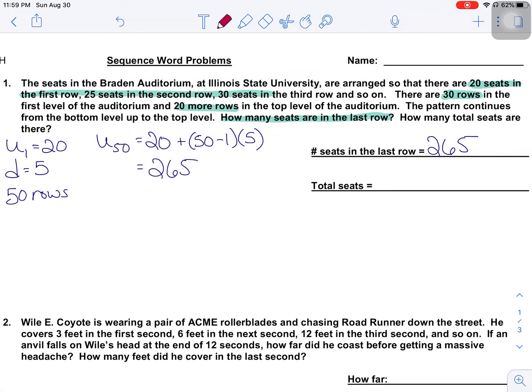So now that we've got the first question, there was an additional question of how many total seats are there? Now, could you write out all 50 numbers? Sure. Could you then take all 50 numbers and put them in your calculator? Sure. Is it possible you might make a mistake? Absolutely. So instead of writing out 50 numbers, instead of adding up 50 numbers that way,